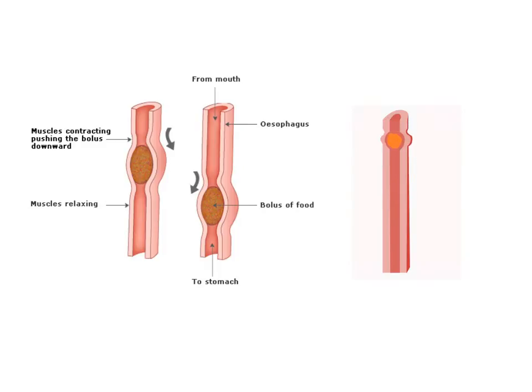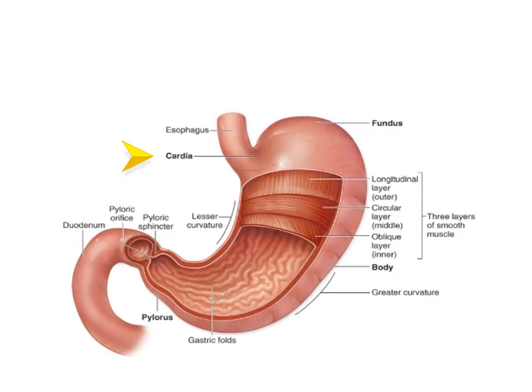The bolus of food is then swallowed and passes through the esophagus, past the cardiac sphincter, into the stomach where gastric juices are added and the bolus is churned by peristalsis. The bolus of food is now referred to as acidic chyme, which is secreted into the small intestine through the pyloric sphincter.